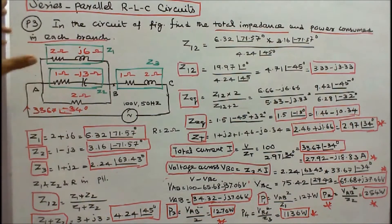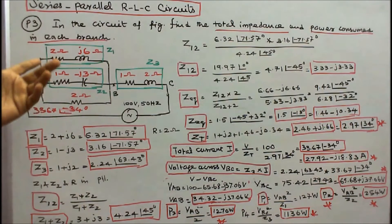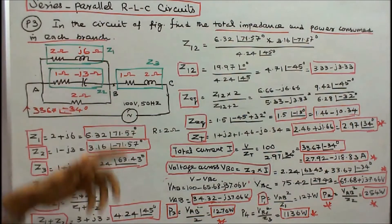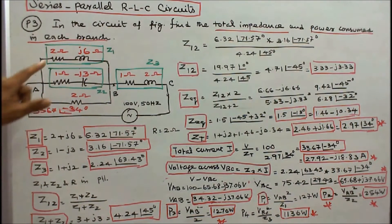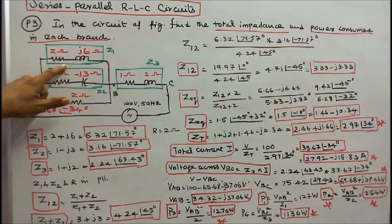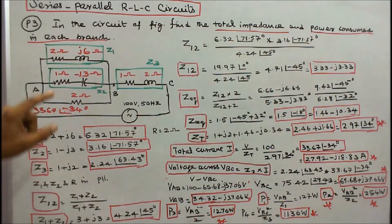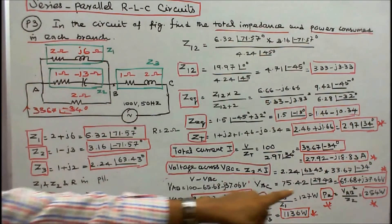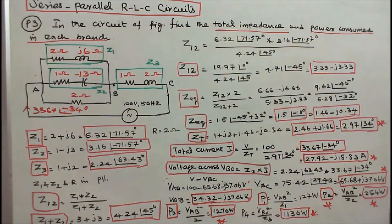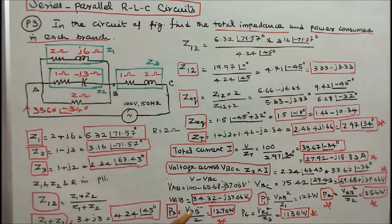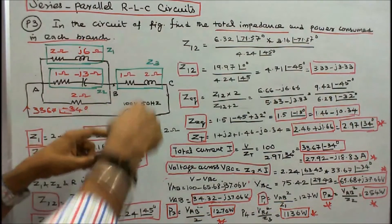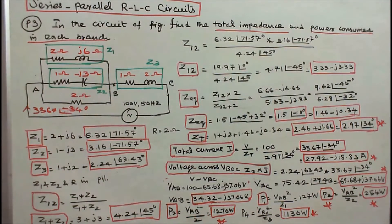Z1, Z2, and the resistor are connected in parallel, so voltage is constant. I can find the power consumed in each branch: P1 = VAB² / Z1 = 127 watts; P2 = VAB² / Z2 = 254 watts; P3 = VAB² / 2 = 1270 watts; P4 = VBC² / Z3 = 1136 watts.